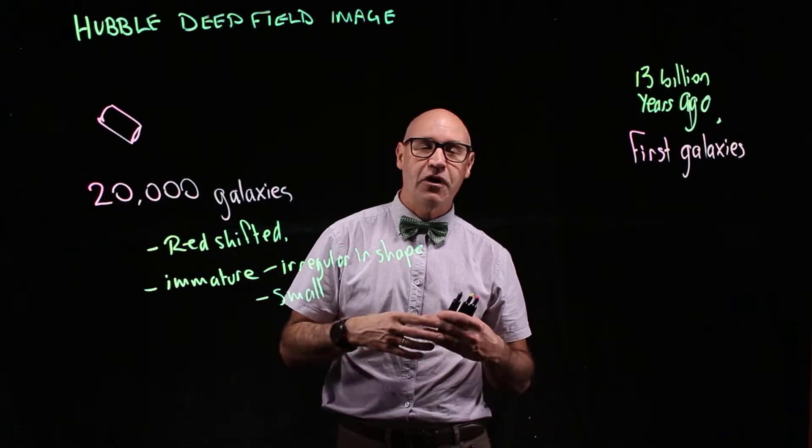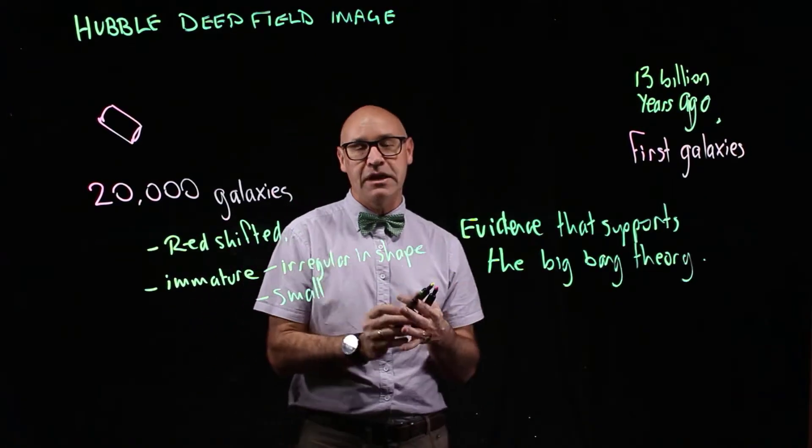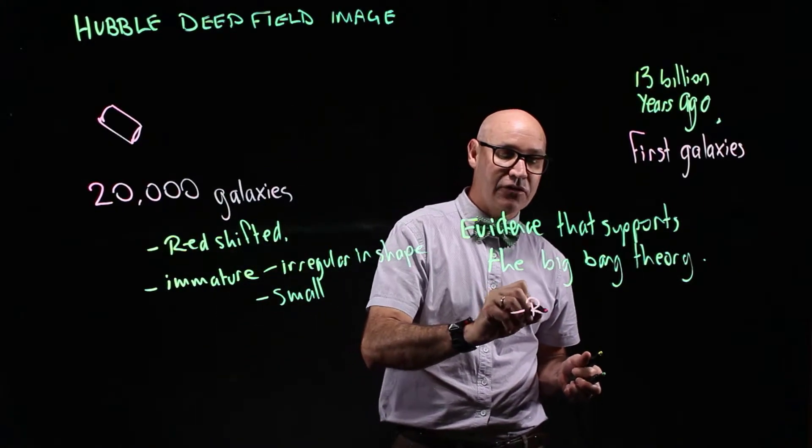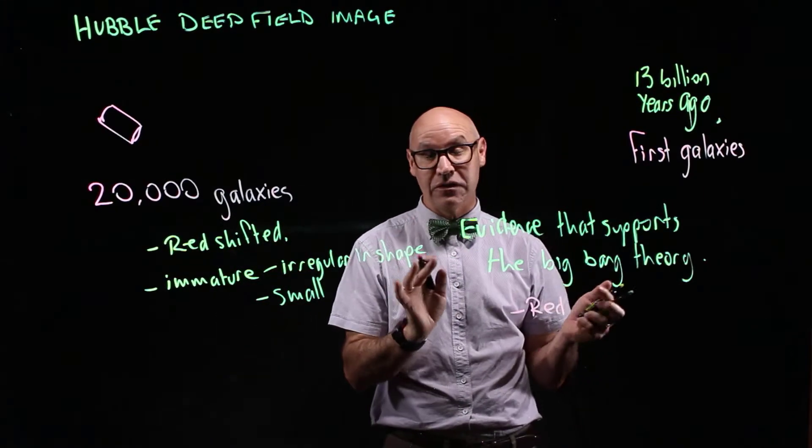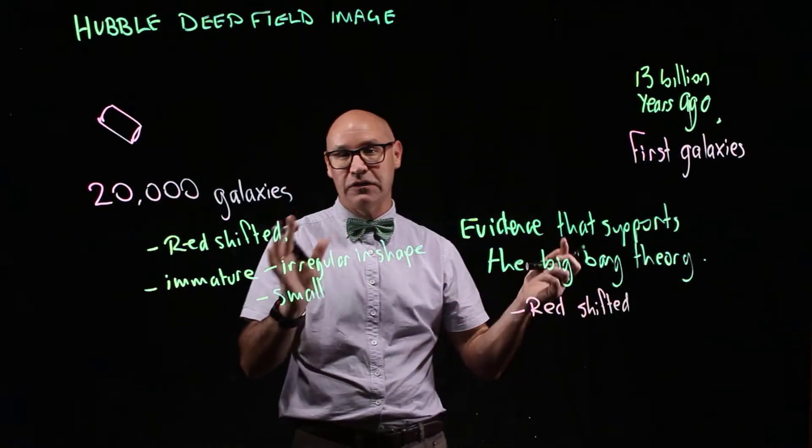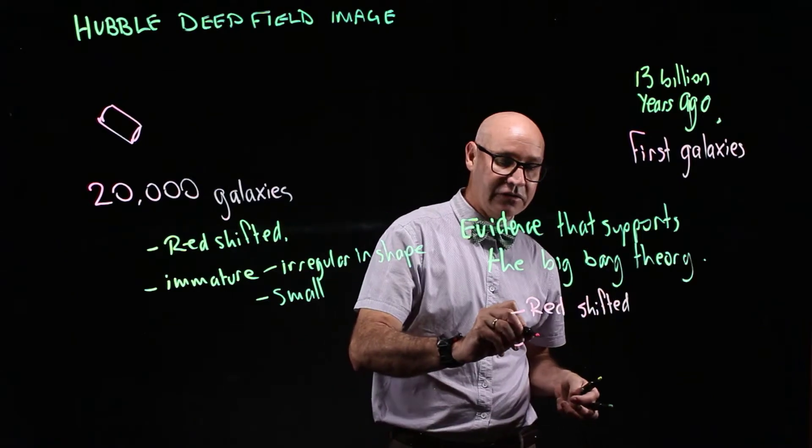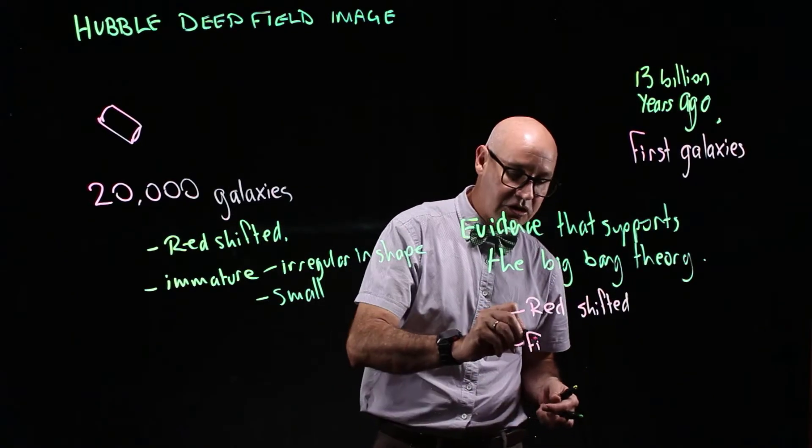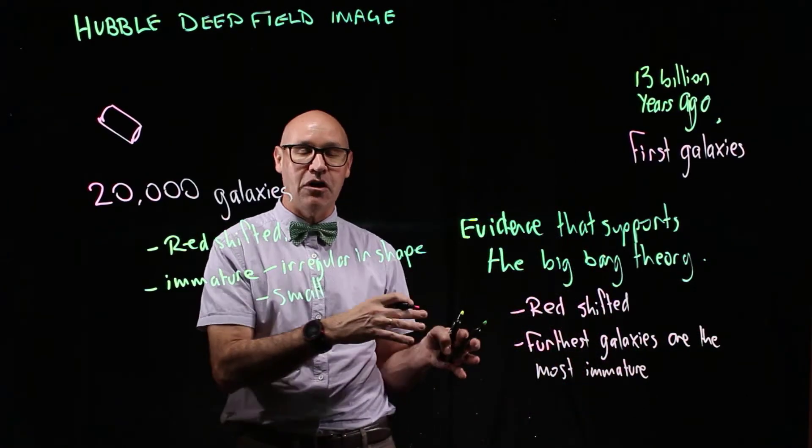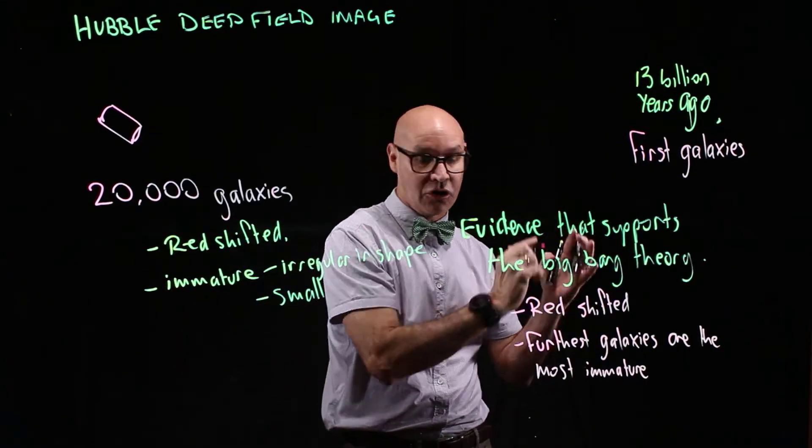So the Hubble Deep Field provides evidence that supports the Big Bang. So the Hubble Deep Field image provides evidence that supports the Big Bang theory. Firstly, that the galaxies are redshifted. So that obviously supports the idea that the universe is expanding. But the other thing is that the first galaxies, or I should say the furthest galaxies, are the most immature. So that really supports the idea that the universe has evolved and that the universe had an origin.